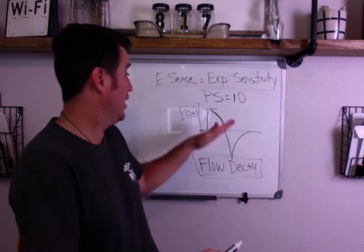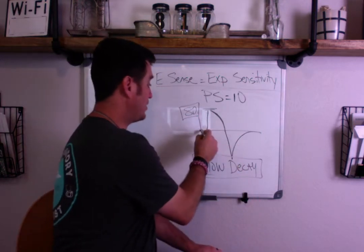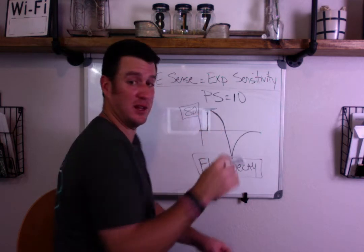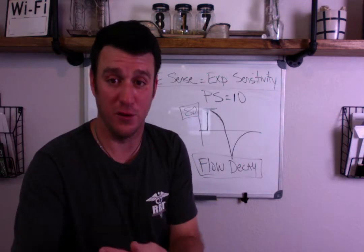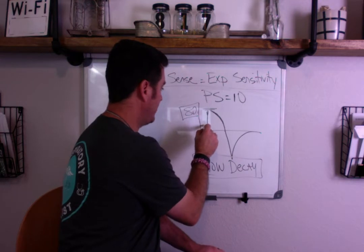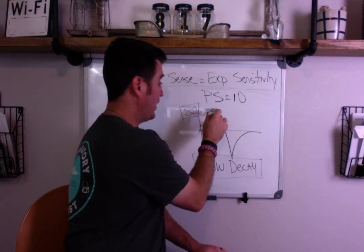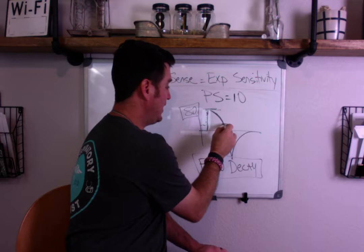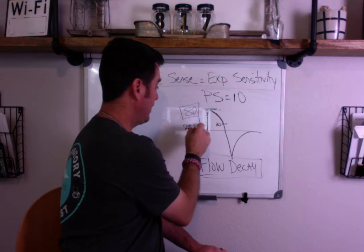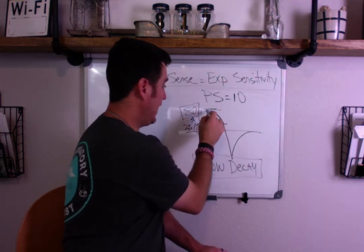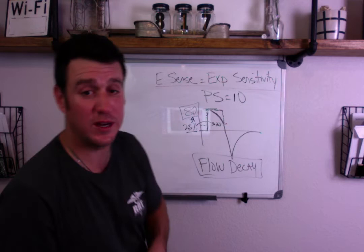So 25% of 80 is 20 — 80 divided by 4 is 20. The pressure support is going to stay active and hold until the flow decays down to 20 liters per minute. Drawing a pressure waveform on top of the flow waveform: the pressure comes up during inspiration, holds, and then cuts off right when flow reaches that 20 L/min threshold, which is 25% of the peak. That's what expiratory sensitivity is.